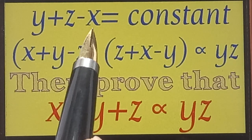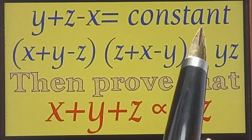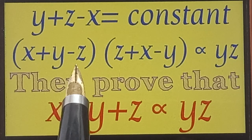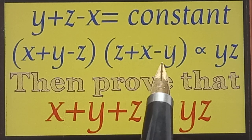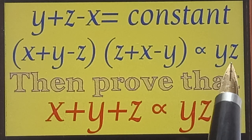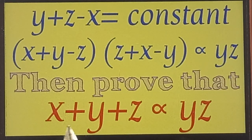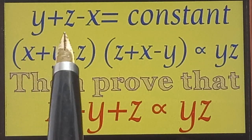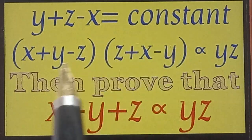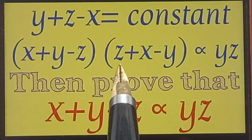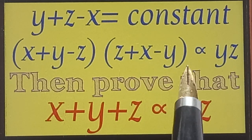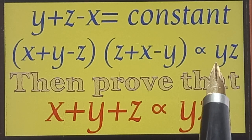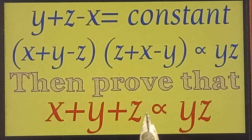Given that y plus z minus x equals a constant, and x plus y minus z into z plus x minus y varies as y into z, then prove that x plus y plus z varies as y into z.